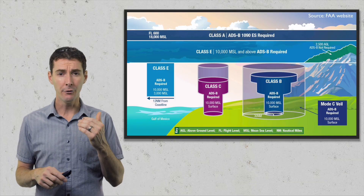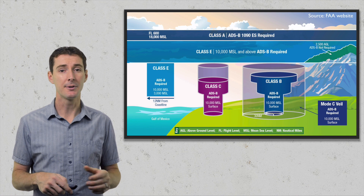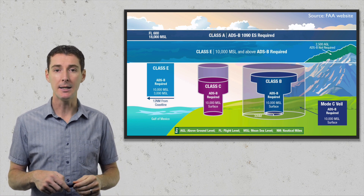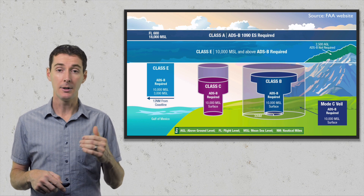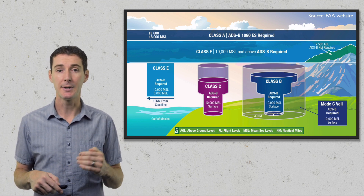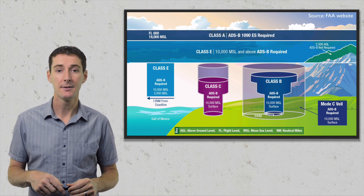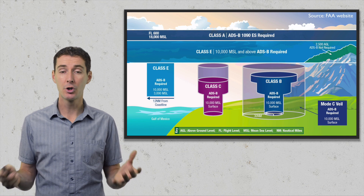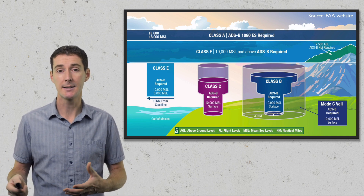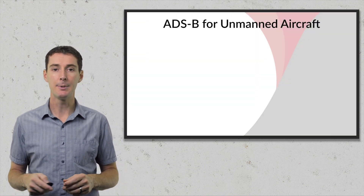For drone pilots, what does that mean? We don't fly at 10,000 feet — we fly at 400 feet. So aircraft equipped with ADSB will be found in controlled airspace in Class B, C, and D under 400 feet. In Class E airspace, aircraft may or may not be equipped with ADSB because it is not required. This will be important when we talk about one of the pitfalls of ADSB.